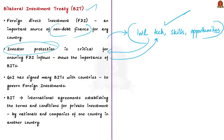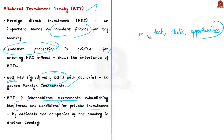To attract foreign investments and safeguard its own interests, the Government of India has signed many bilateral investment treaties to govern foreign investments. Bilateral investment treaties are international agreements that establish the terms and conditions for private investment by nationals and companies of one country in another country.